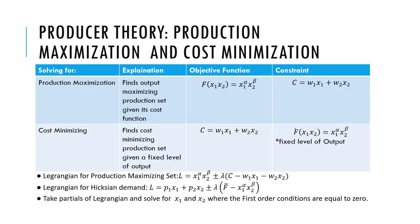Moving on to producer theory, we have production maximization and cost minimization. It's essentially the same as solving for Marshallian and Hicksian demands, except now we're using production functions instead of utility functions, and cost functions instead of a budget equation. The math is the same.